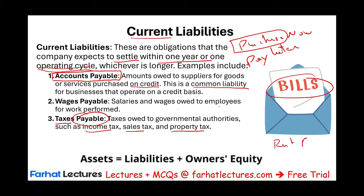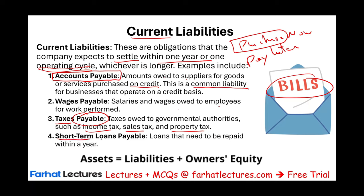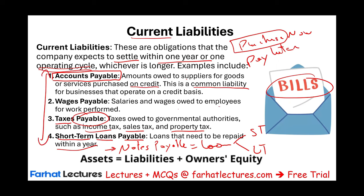You could also have rent payable if you're behind on your rent, and utilities payable if you cannot pay your utility bill. There are also short-term loans payable — sometimes called notes payable — which is a loan that must be paid within one year. This is not a complete list of current liabilities; anytime you owe an obligation — usually money, or sometimes you have to perform a service — that's a liability.